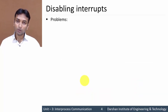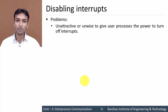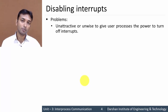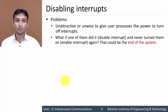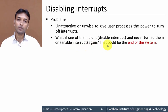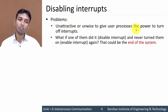Now let us look at the problems or disadvantages of disabling the interrupt. The first problem is that it is unattractive or unwise to give a user process the power to turn off the interrupt. If we give that power to a user process, and one of the user processes disables the interrupt and never enables it again, it will be the end of the system. That is why it is unwise to give a user process the power to turn off the interrupt.